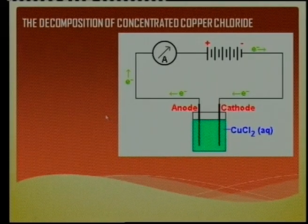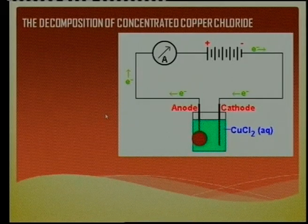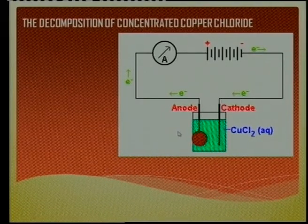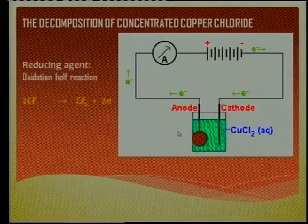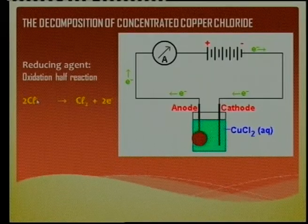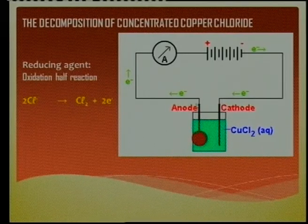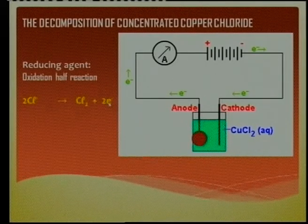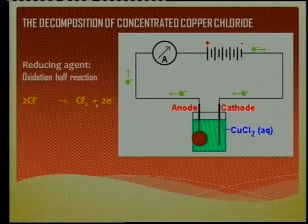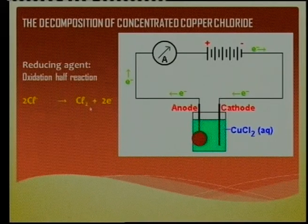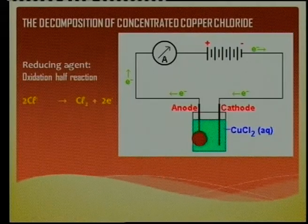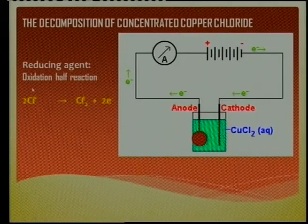Let's look at the half-reactions quickly. What happens at the anode? Oxidation occurs at the anode. The chloride ions move toward it, and the battery steals the electrons — they lose their electrons. This is oxidation, and two chloride ions give chlorine gas (Cl₂). Therefore the chloride ion is the reducing agent, because reducing agents undergo oxidation.